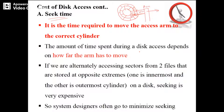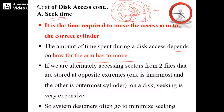The amount of time spent during a disk access depends on how far the arm has to move. If the next data is in the adjacent cylinder, the time consumed will be less. But if you are reading from the innermost disk and want to read a sector on the outermost track, the time consuming is more. So system designers often try to minimize the number of seeks so that time consumption will be less.